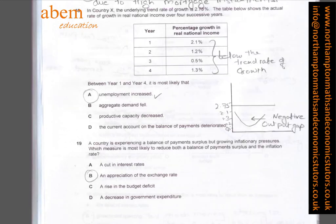In question eighteen, we can see that in years one through four everything is below 2.75. I have plotted a graph to show that 2.75 level. The curve shows a negative output gap, which indicates recession, so unemployment increases during this period.